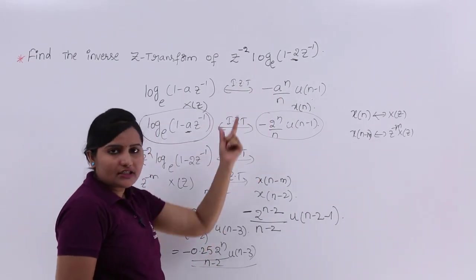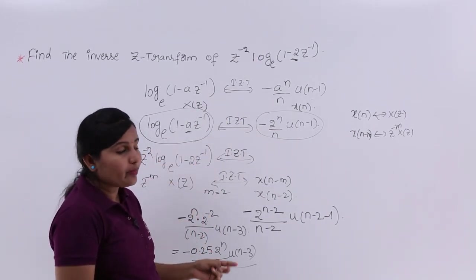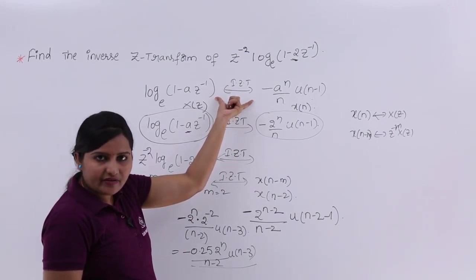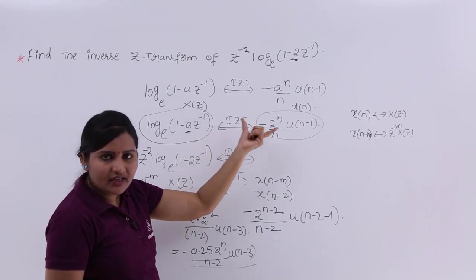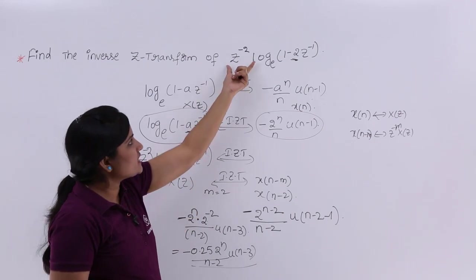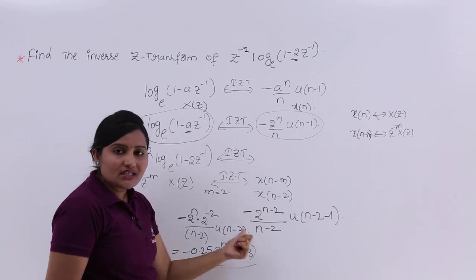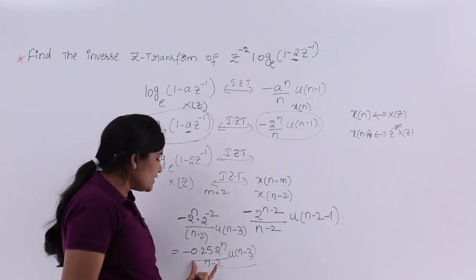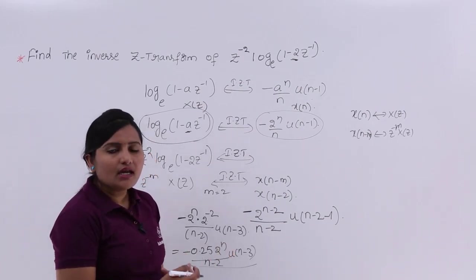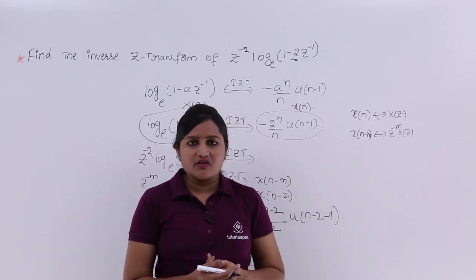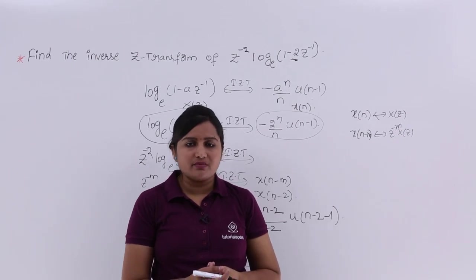So this is the signal related to this transform. We used the differentiation in Z-domain property, derived in the previous class, and applied the time shifting property to handle the Z^(-2) term. By this we got the inverse Z-transform as -0.25 * (2^n / (n-2)) * u(n-3). This is how we can get very easy answers to complex questions by combining the differentiation in Z-domain property and the time shifting property.